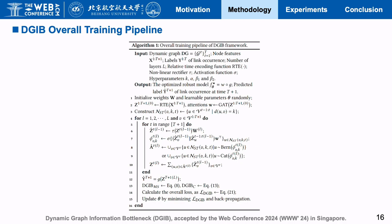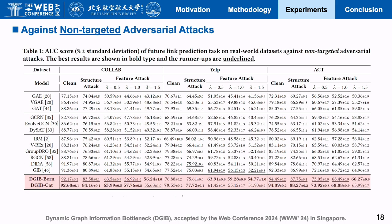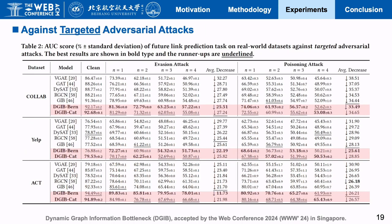This is the overall training pipeline of our DGIB framework. We conduct experiments on ColLab, ELB, and ACT dynamic graph datasets, compared with sets of baselines under multiple adversarial attack settings. This shows the link prediction results against non-targeted adversarial attacks, and this shows the link prediction results against targeted adversarial attacks.